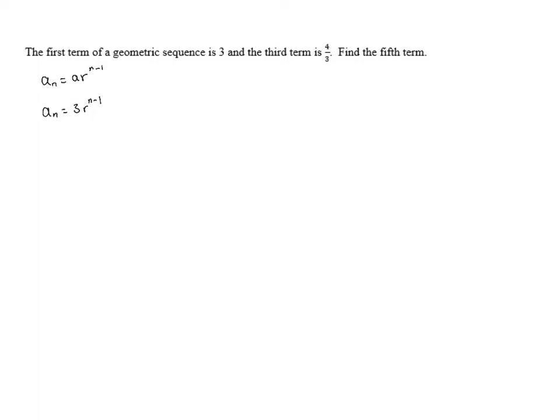to figure out what the common ratio is. So if we look at the third term, a_3, this is going to be 3·r^(3-1). We've plugged in 3 for n, which is equal to 3r^2. And in this case, we're told that the third term is 4/3. So we know that this is equal to 4/3.